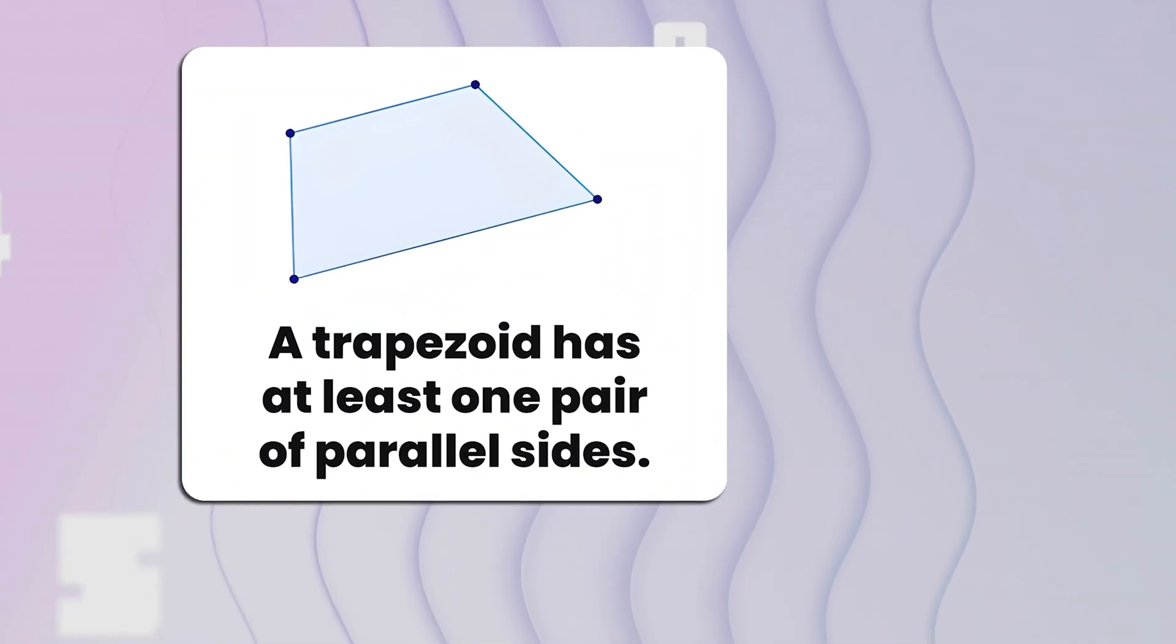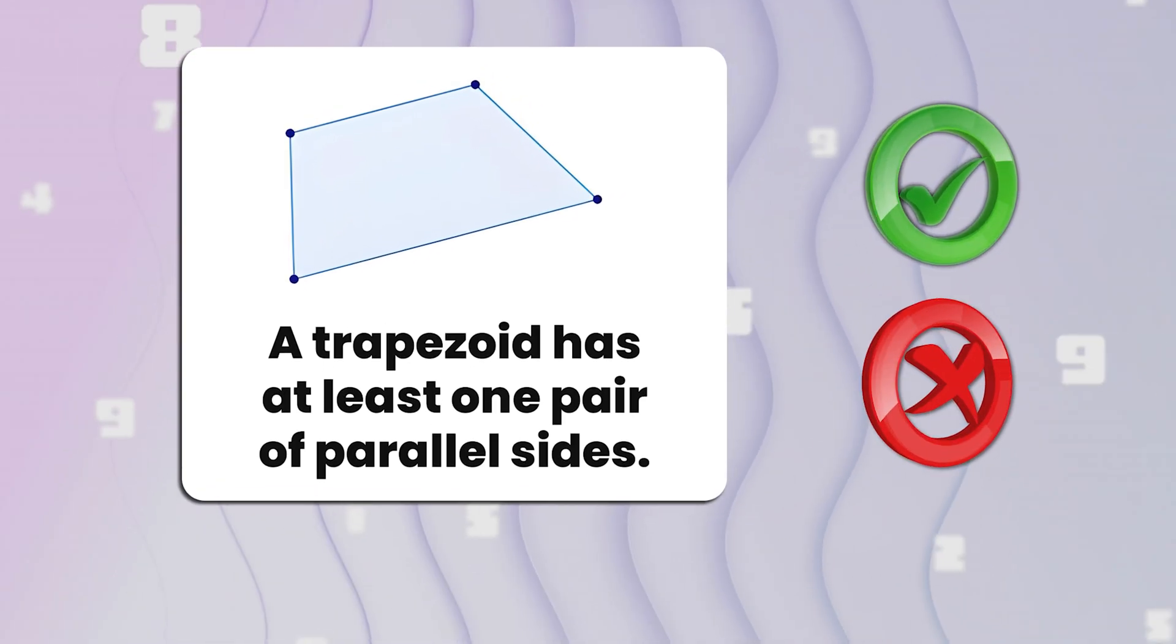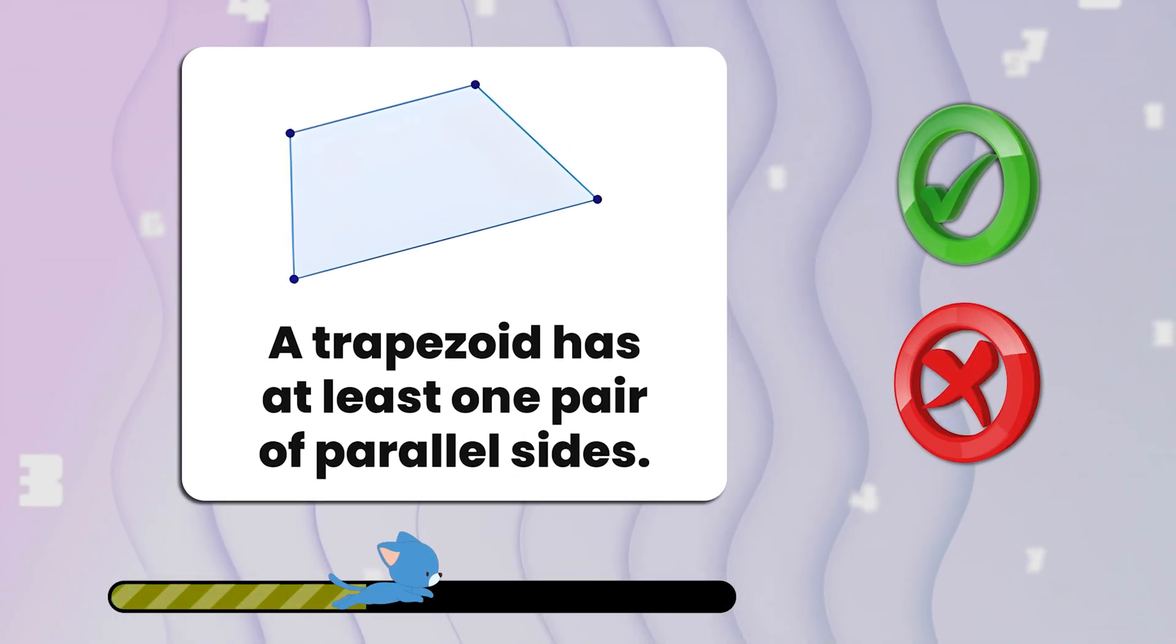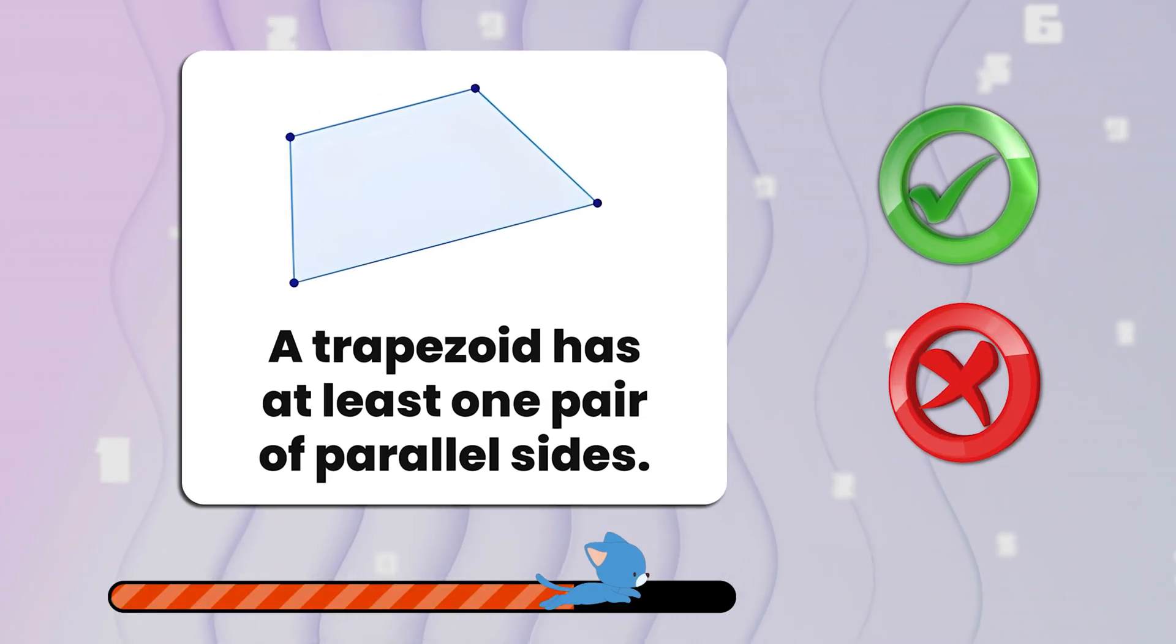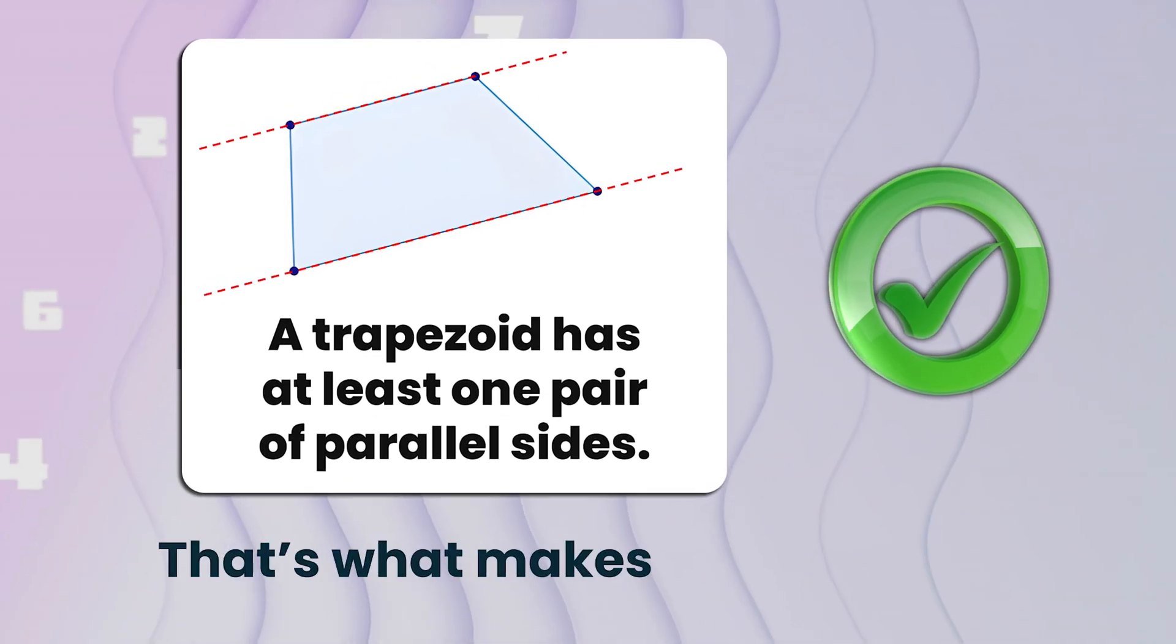Number six. A trapezoid has at least one pair of parallel sides. True or false? That's true. That's what makes it a trapezoid.